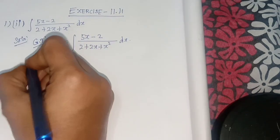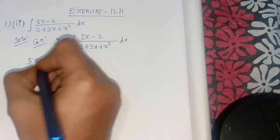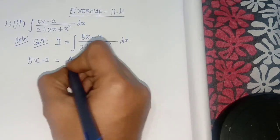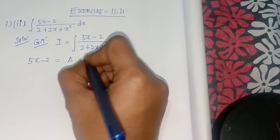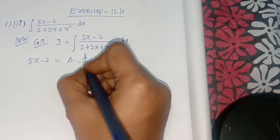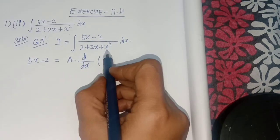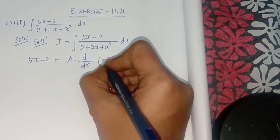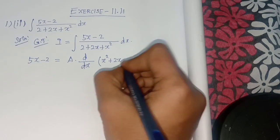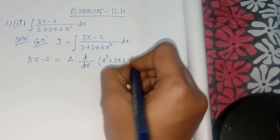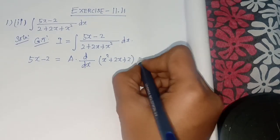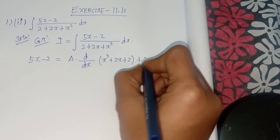We write 5x minus 2 equal to A into d/dx of (x squared plus 2x plus 2) plus B.